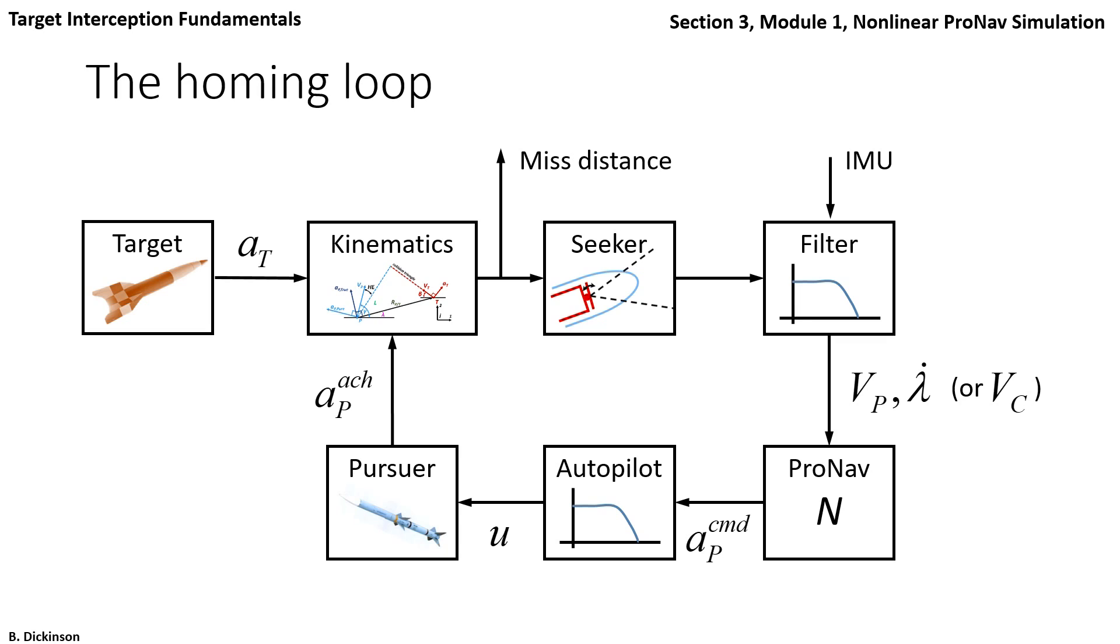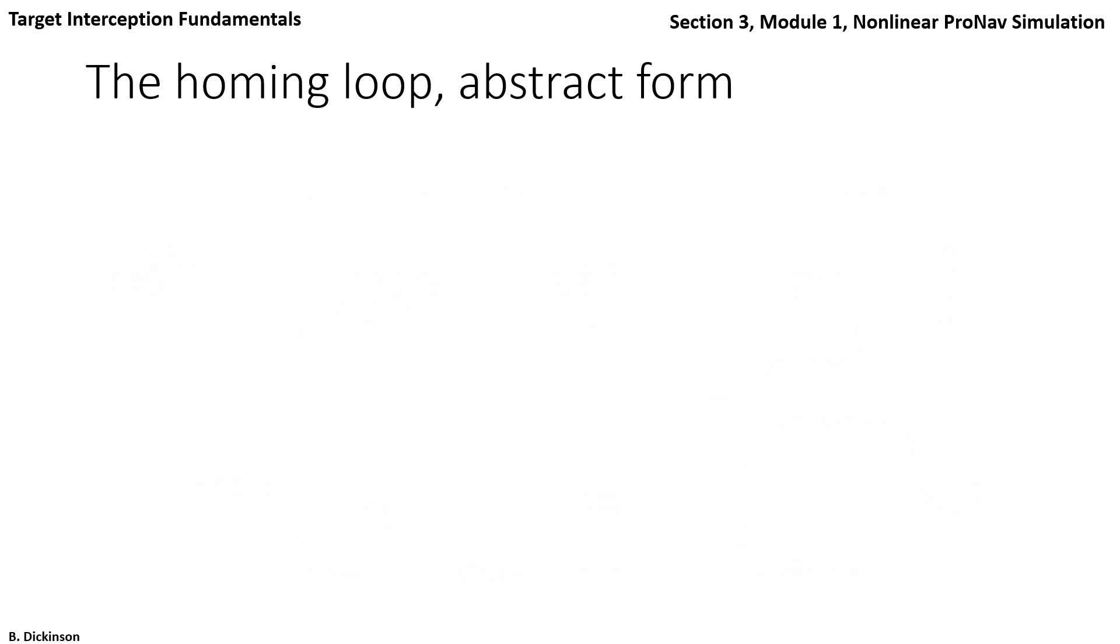Now proportional navigation is a feedback control law. And this is a feedback loop that it exists within. So from the vantage of a feedback control loop, we can divide the controller and everything else into the process and the control. Now separating things out into process and control, we can condense the homing loop into a more abstract form where we have our homing missile process.